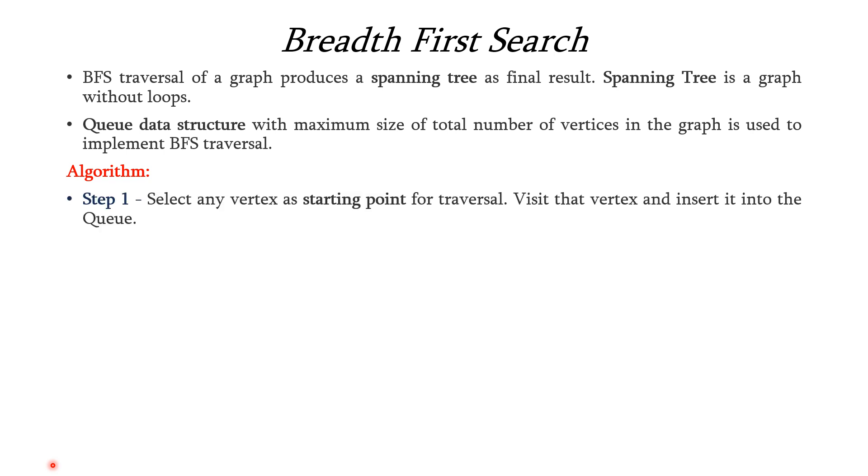So step 1 is we have to select any vertex as a starting point for traversal from the given graph and consider it as visited node and then we have to insert that visited node into the queue.